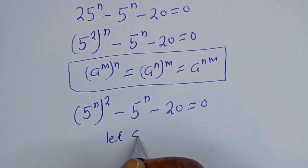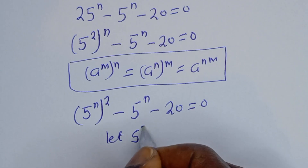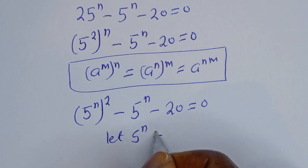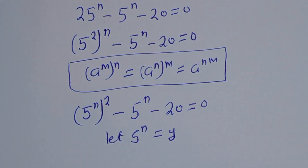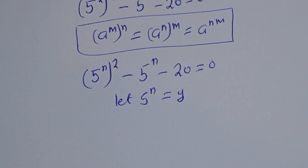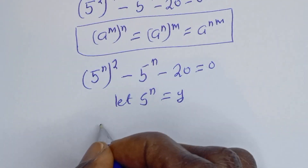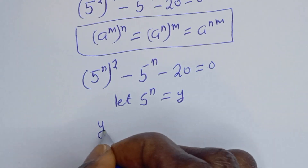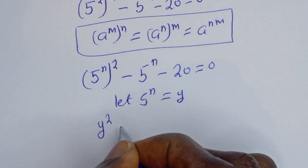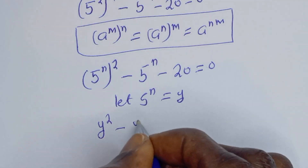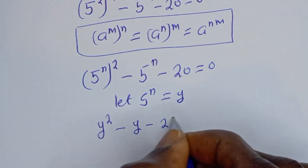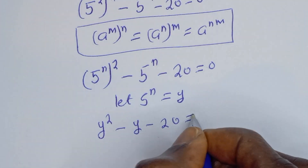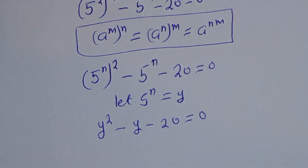Let 5 to the power of n equal y. Then we have y squared minus y minus 20 is equal to 0.